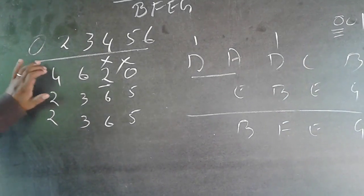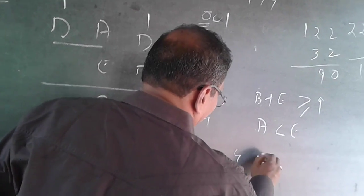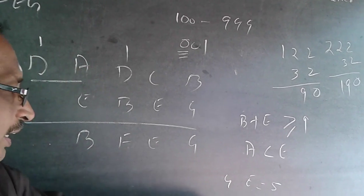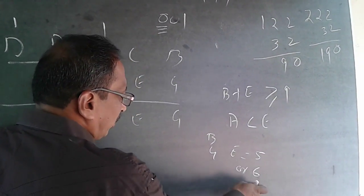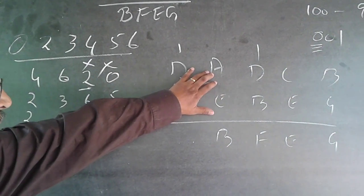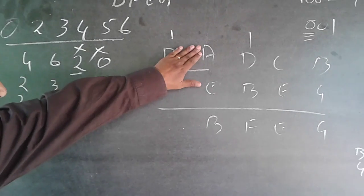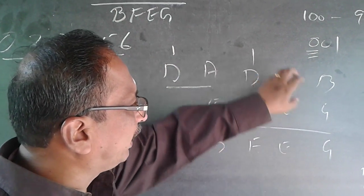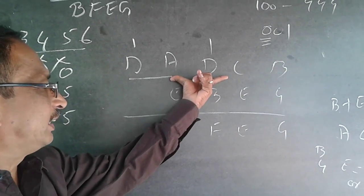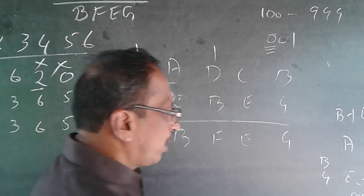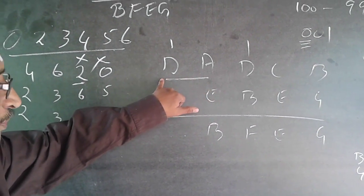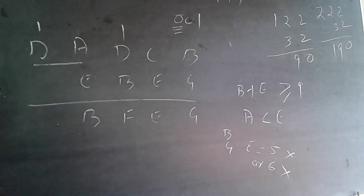If B is 4, then E will be equal to 5 or 6. If B is 4 and E is 5, A will become 0. But then 5 plus 5 means C also becomes 0 — I cannot have both A and C as 0, so B=4, E=5 is eliminated. If B is 4 and E is 6, then A will become 1 — but 1 is already given, so 6 is also ruled out. Therefore B cannot be 4.